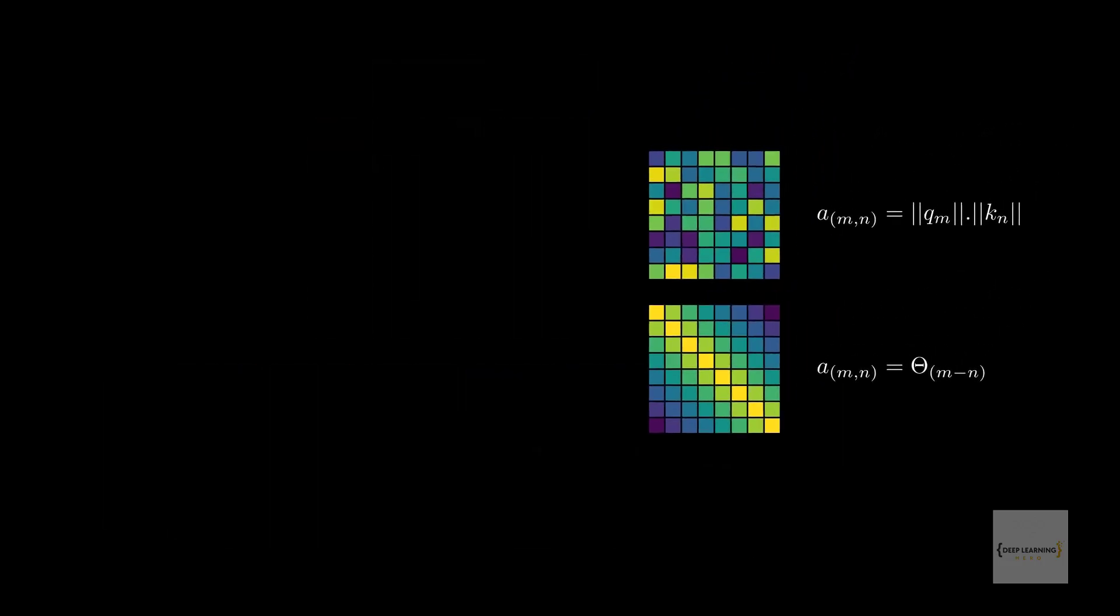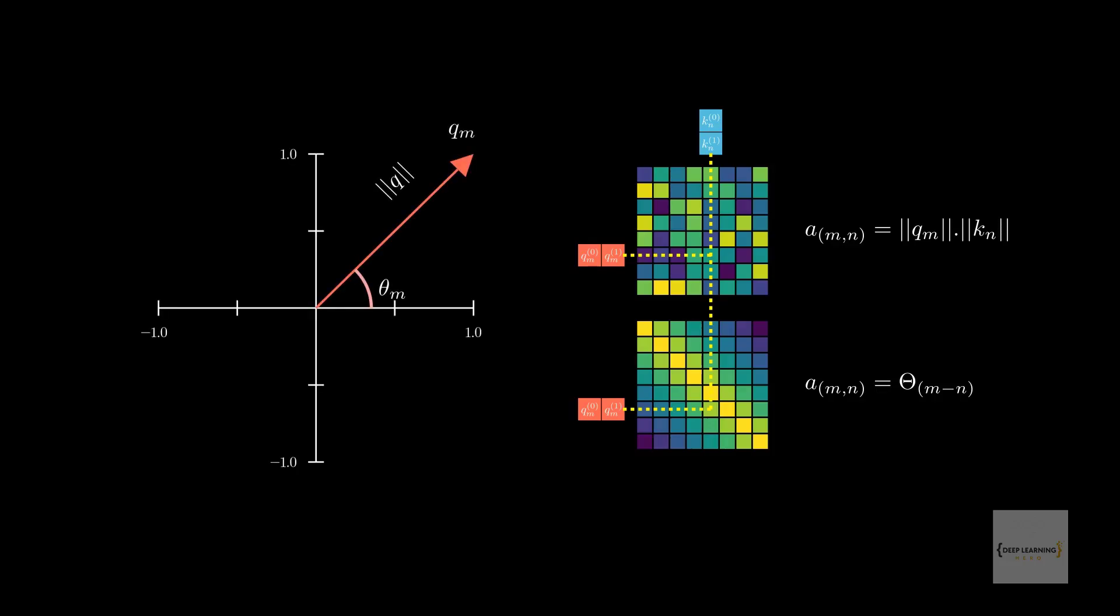Each entry in this attention metrics is the dot product of some qm and kn. Since we are working with 2D vectors, we can visualize the query and the key on a 2D plane. Let's then switch to the polar coordinates. Now, here's one way to think about the relationships between the q and k vectors and the two versions of the attention metrics that needs to be captured.